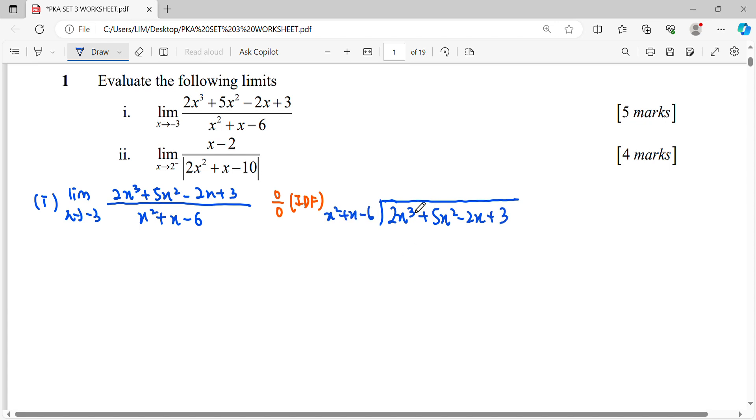To get the term 2X cubed, we need a multiplier of 2X, which gives us 2X cubed. Expanding the following terms and finding the balance and remainder: 2 minus 2 is 0, 5 minus 2 is 3, and 2 minus negative 12 becomes positive 10 plus 3.